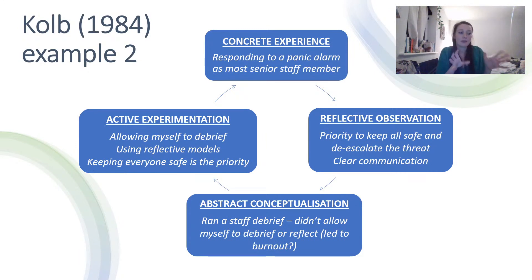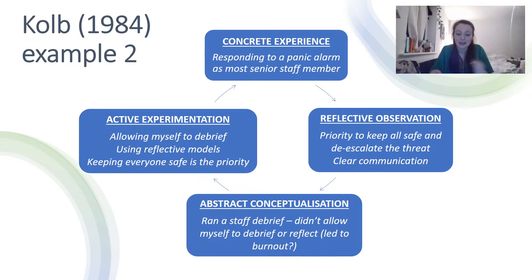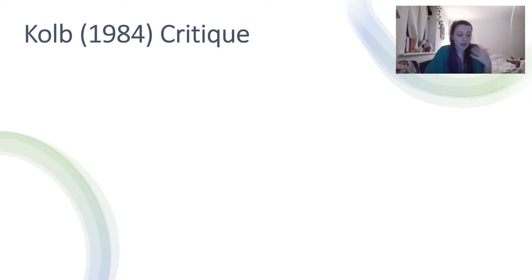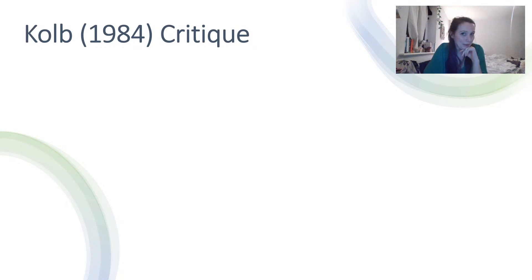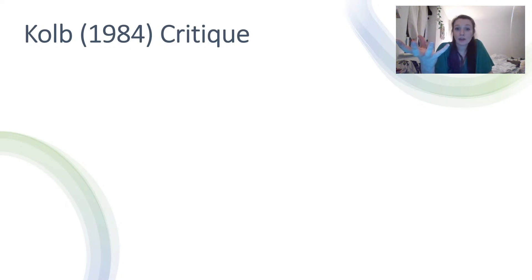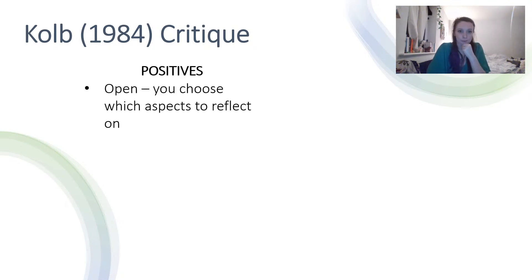I've given you two very different examples — the first is quite clean-cut, the second is messier because it feels messier for me. Moving on to the critique. Some of the positives: it's open — you can choose which aspects to reflect on. I really like that because you can include other models, the social graces, family scripts, the Johns model, the Gibbs model. If you don't feel ready to reflect on a certain aspect, you don't have to.